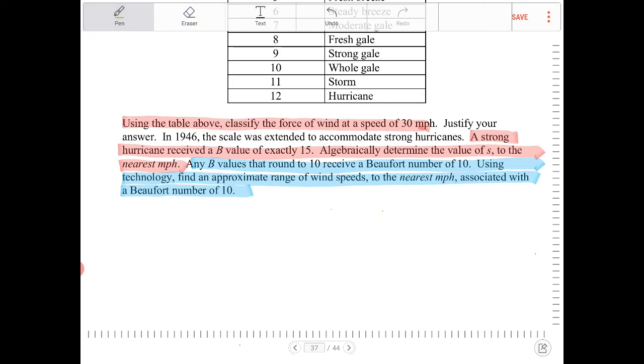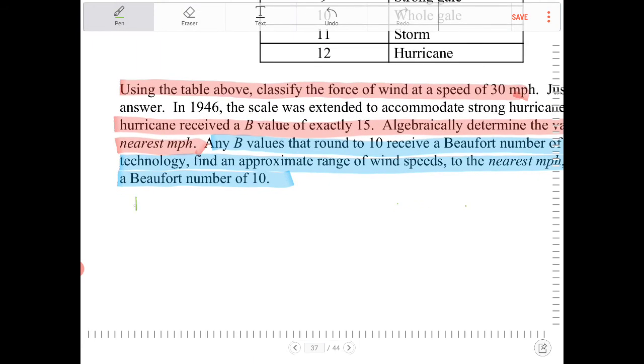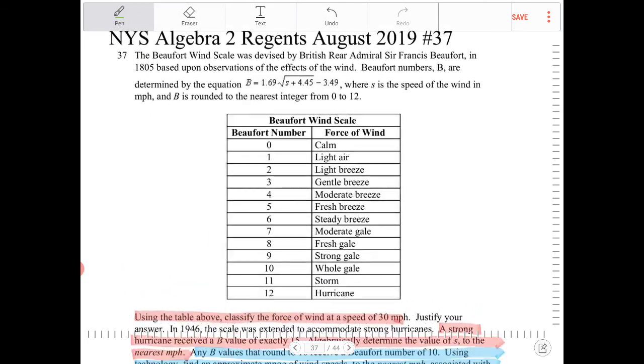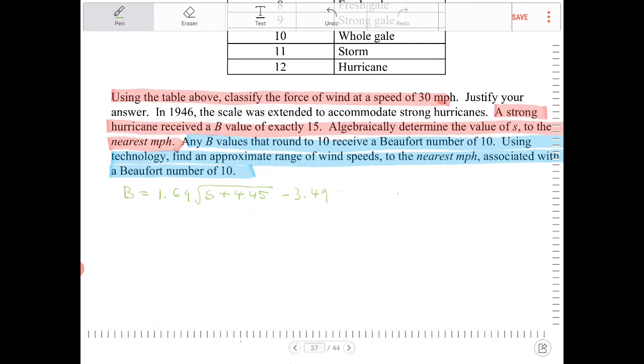So to do that, we're going to take the Beaufort Wind Speed function, which is 1.69 square root s plus 4.45 minus 3.49. The first question here is to solve for the Beaufort number when there's a wind speed of 30. So let's do that.